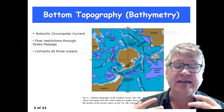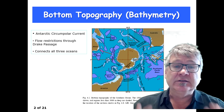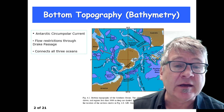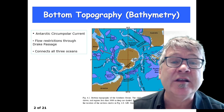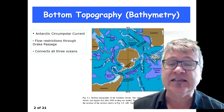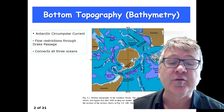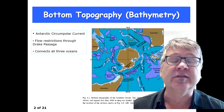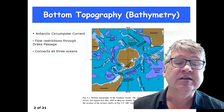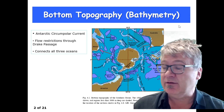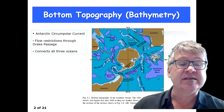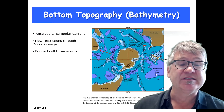You can always see the purple regions, which are regions where the total water depth exceeds five kilometers. These are so-called deep basins. And in this graph here, you can see the southwest Pacific basin.